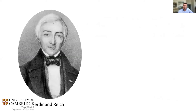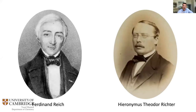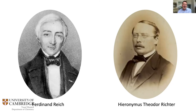Less romantically, in 1863, Ferdinand Reich, a professor at the School of Mines in Freiburg, searched for thallium in local zinc ores and found what he believed was a new element. Because he was colorblind, he entrusted the spectroscopic analysis to his assistant Hieronymus Theodor Richter — a decision he later regretted when Richter tried to claim the discovery as his own. On placing the residue into the Bunsen flame, a brilliant indigo line appeared; the element was named indium after its characteristic spectral line.